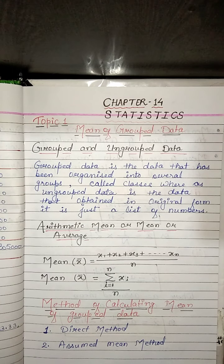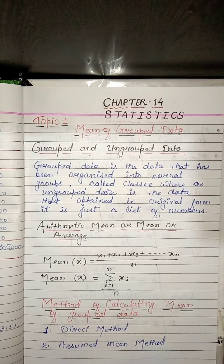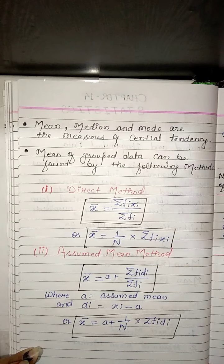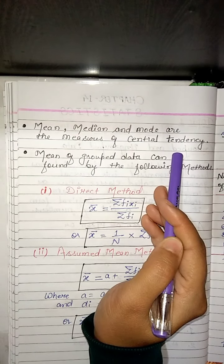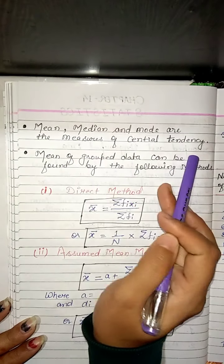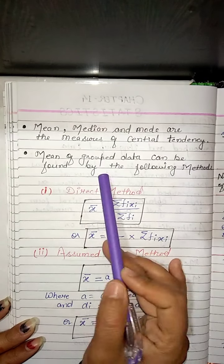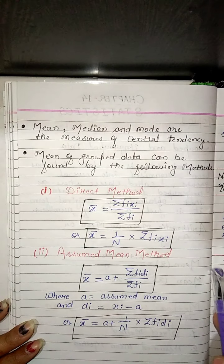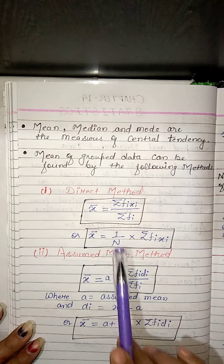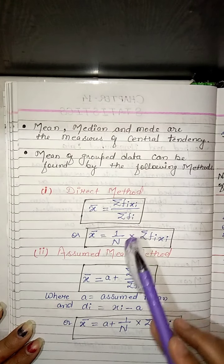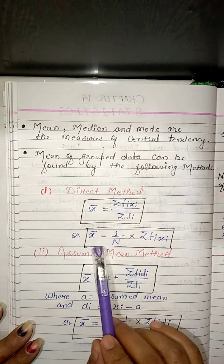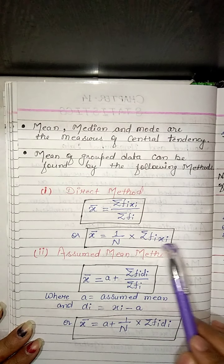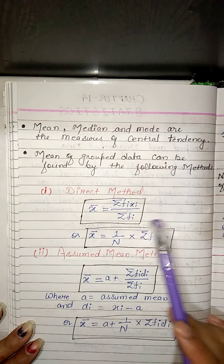In the direct method, we first find the class mark of each class interval. Each class mark serves as a representative of the whole class, denoted by xi. For the ith class interval, we have frequency fi corresponding to class mark xi. The formula for the direct method is: x̄ = Σ(fi × xi) / Σfi, or equivalently, x̄ = (1/n) × Σ(fi × xi), where n = Σfi.